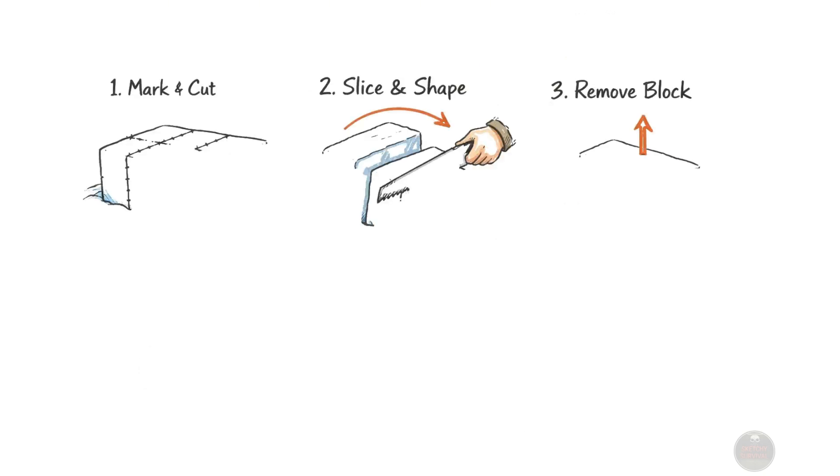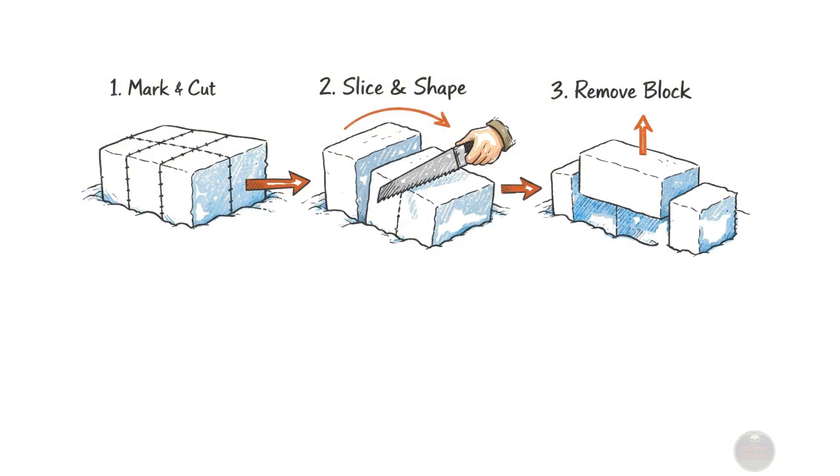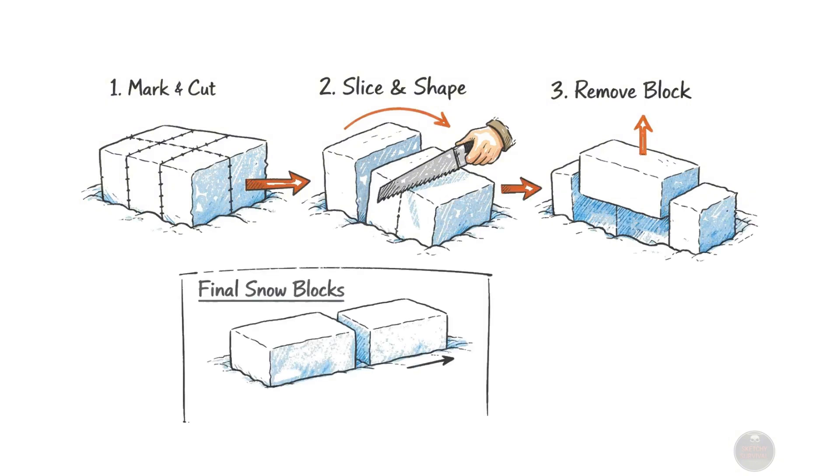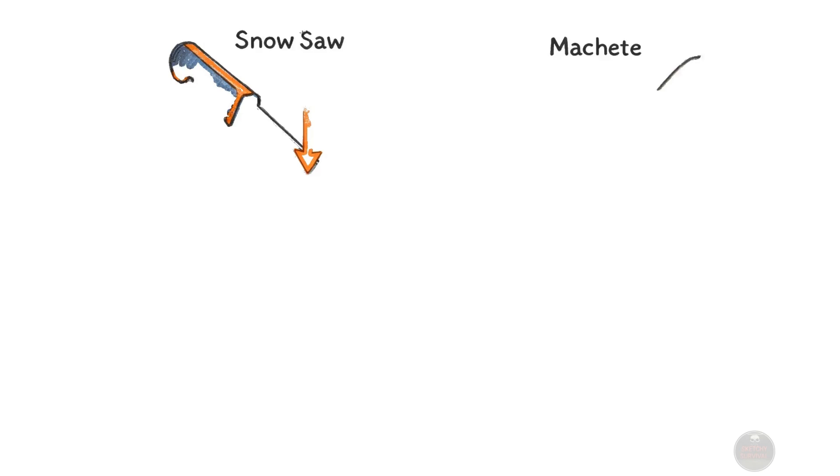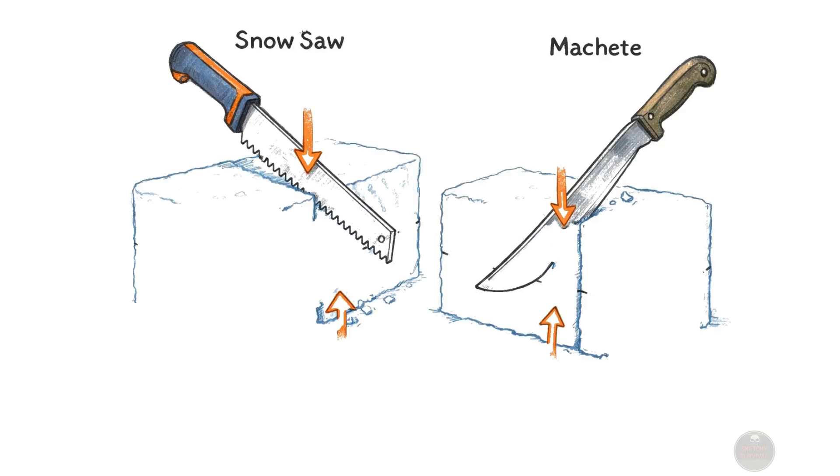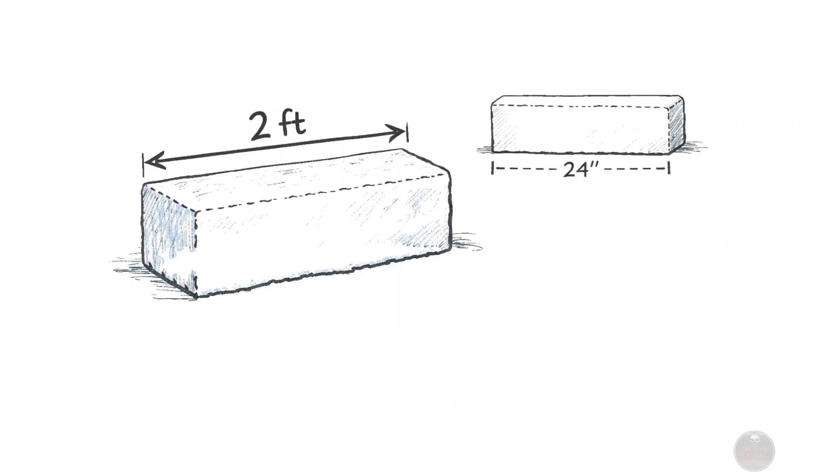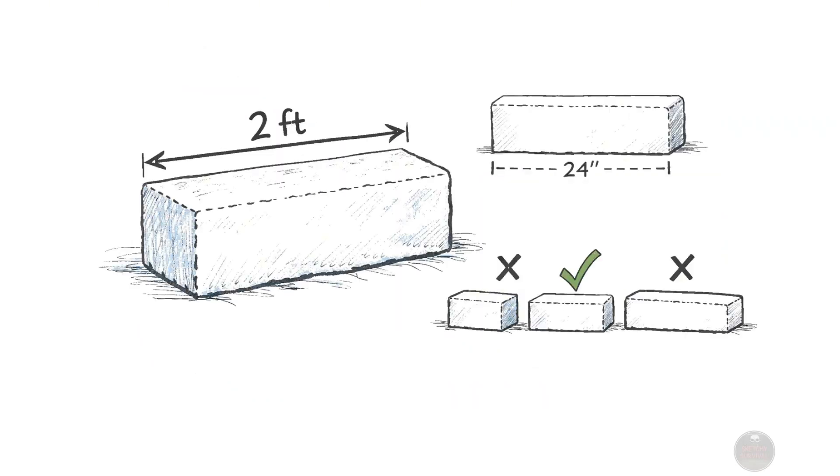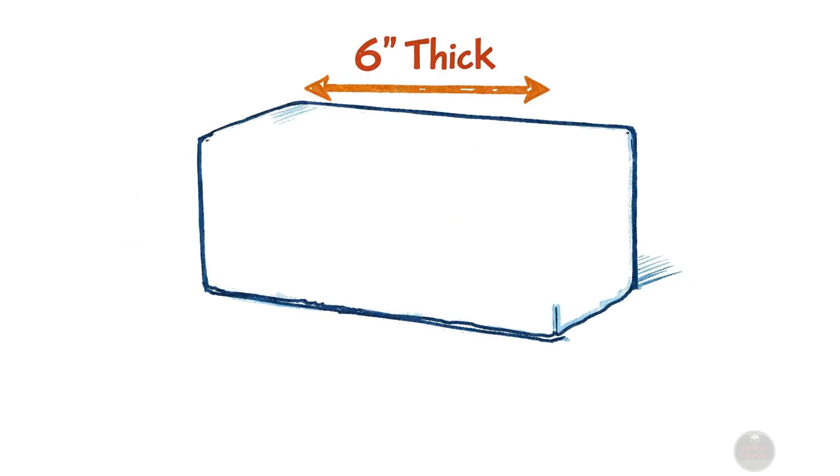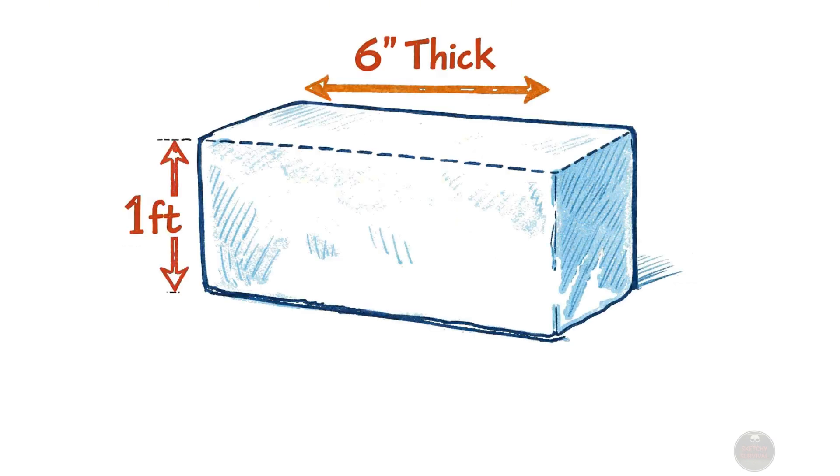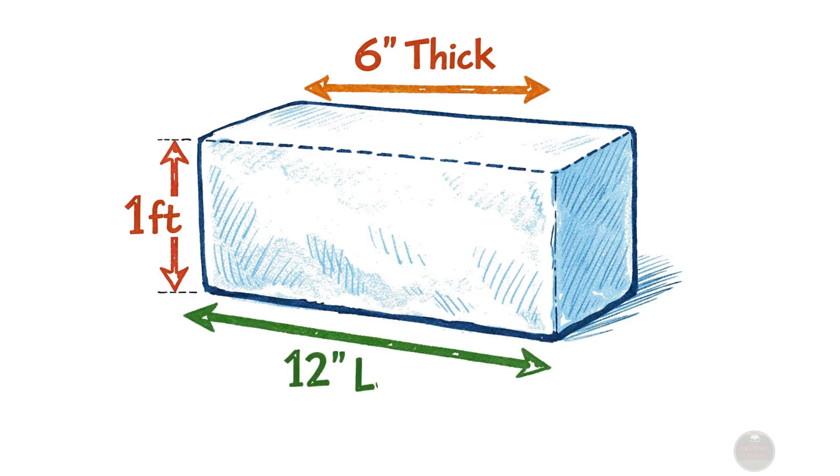Once suitable snow is located, the precise process of cutting these essential blocks into specific shapes begins. Builders often utilize a specialized snow saw or even a sturdy machete for efficient removal of the material. These individual blocks need to be specific, consistent sizes, typically around two feet long, one foot high and six inches thick, ensuring structural integrity throughout the construction.